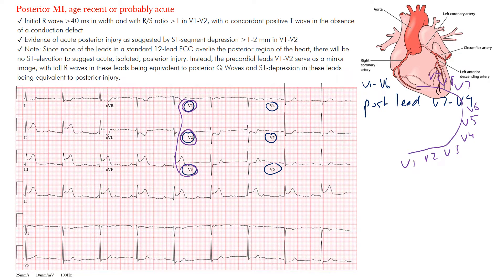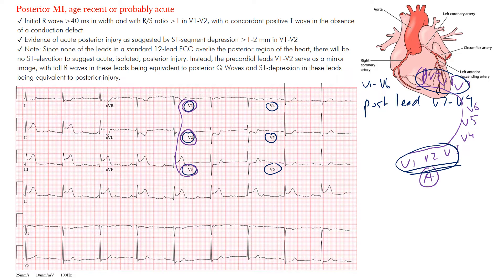The opposite of these posterior leads are essentially these anterior leads, and that's helpful because when we're looking for a STEMI involving the posterior aspect, we want to look at these leads. Instead of seeing ST elevation — which we would if we put those posterior leads on — we're looking for the opposite changes: ST depression in leads V1 and V2 when there's evidence of a posterior MI.